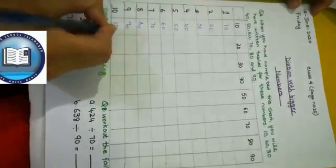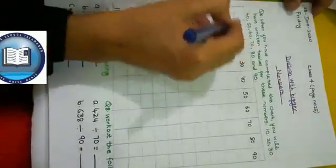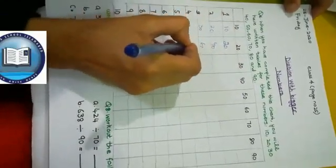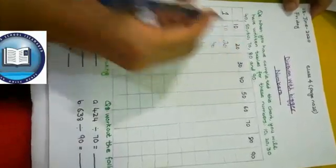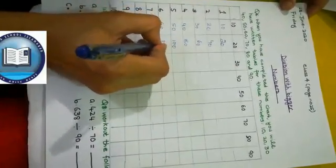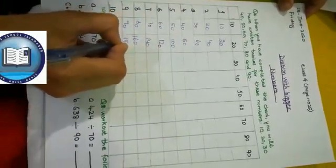90 and 100. Now we have the 2 times table: 20, 40, 60, 80, 100, 120, 140, 160, 180, 200.